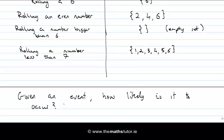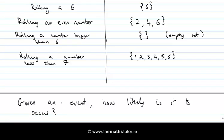But it's interesting to look at the events we've written down here and ask yourself: how likely are these events to occur? For example, how likely is it to roll a six? How likely is it to roll a number less than seven?